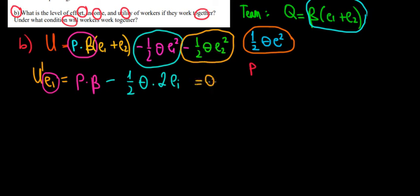We make that equal to zero. The two and two cancel out, so we have p times beta equals theta times e_i.